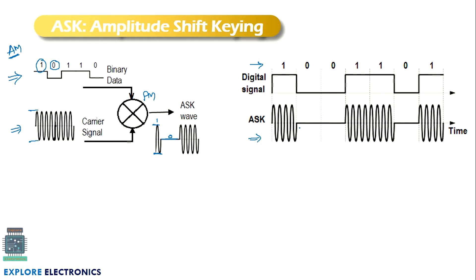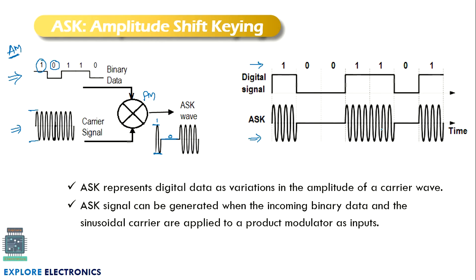When we have 0, the amplitude will be 0. When we have 1, the carrier amplitude is maintained as it is. This is amplitude shift keying — it represents digital data as variations in the amplitude of the carrier wave. We are changing the amplitude of the carrier signal to get the modulated signal.